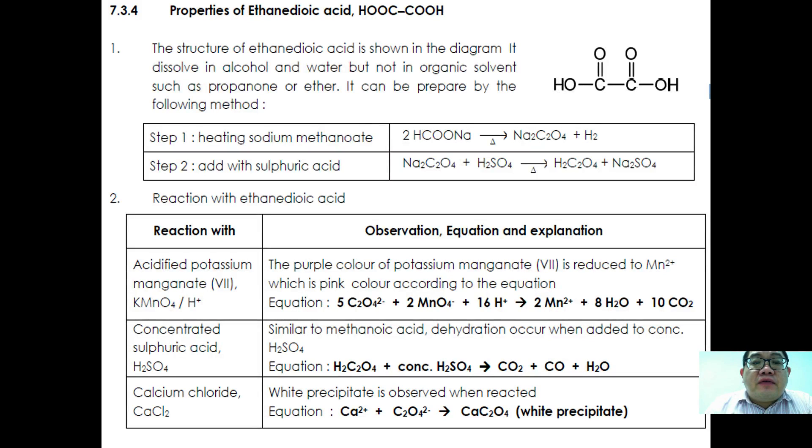Another chemical property we're going to look at is ethanedioic acid. The structure of ethanedioic acid is shown in the diagram. It dissolves in alcohol and water but not other organic substances such as propanone or ether. It can be prepared by the following method where you first heat with sodium methanoate and then add sulfuric acid to form oxalic acid.